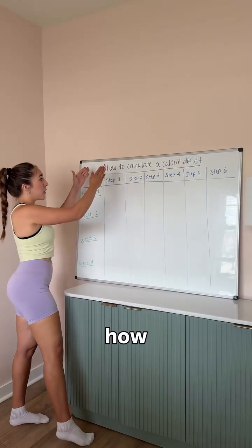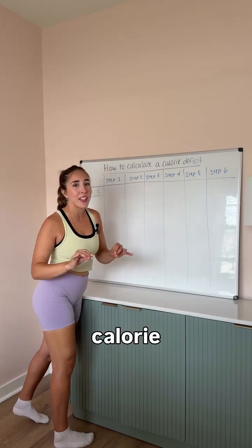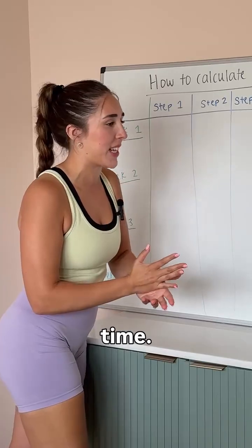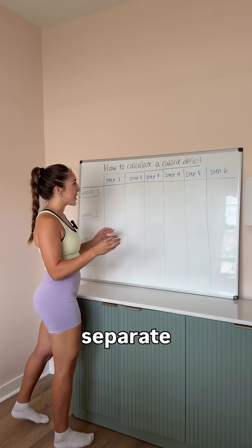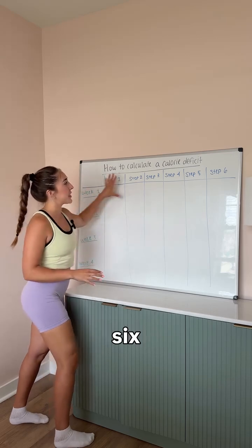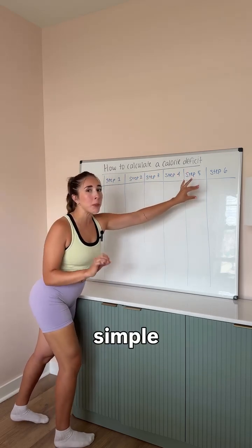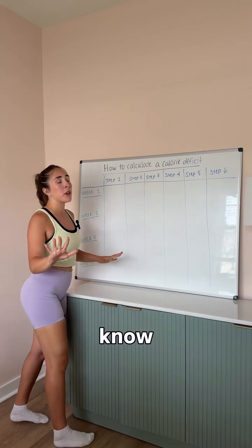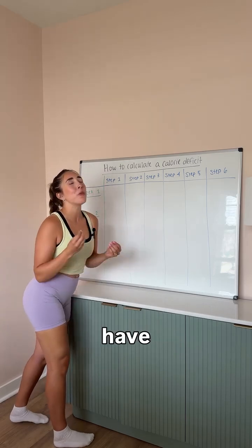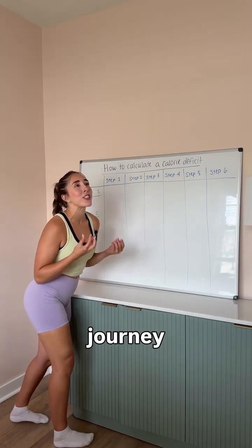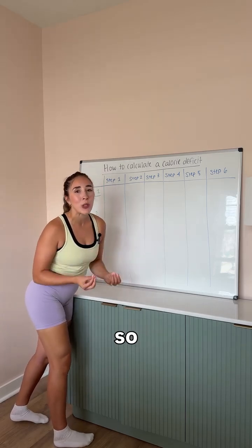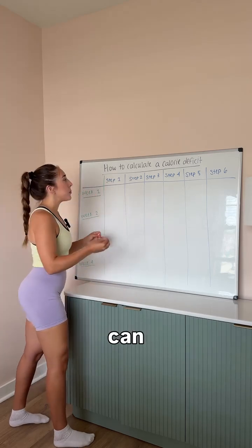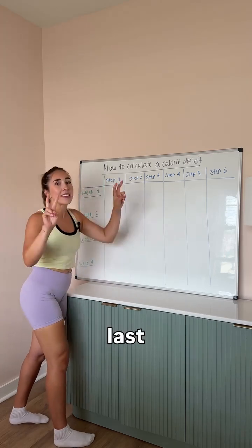Welcome back to the whiteboard. In today's session, we're gonna go over how to calculate your own calorie deficit that's actually going to work this time. Why is it gonna work? Because we're gonna separate this into six simple steps that you're gonna do over the course of the month. I know you are impatient, but you've been on this fitness journey for so long — give me one month to prove to you that this can be your last diet.